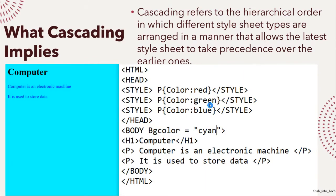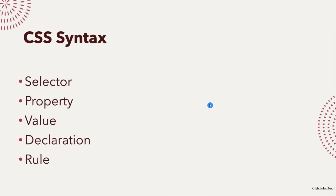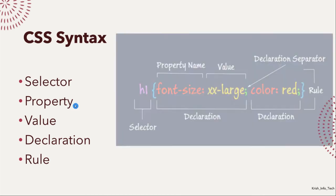Next we are going to see CSS syntax — what is the syntax for cascading style sheet. In the syntax we have five things: selector, property, value, declaration, and rules. Let me show you an example and explain all of these one by one.